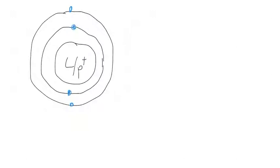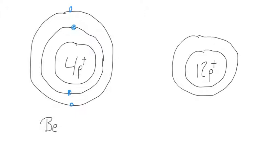So this is beryllium, now we're going to draw magnesium. So magnesium has an atomic number of twelve protons, so twelve is going to be in our nucleus. Our first shell, we can only fit two electrons.